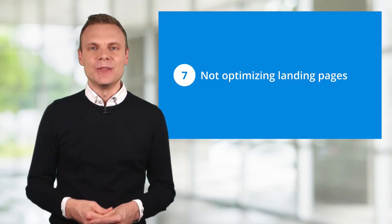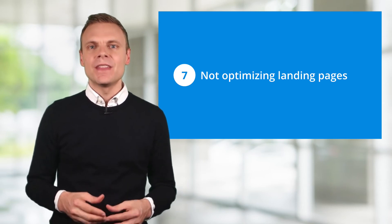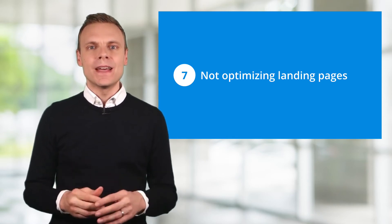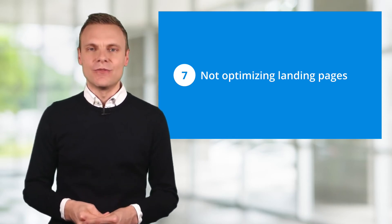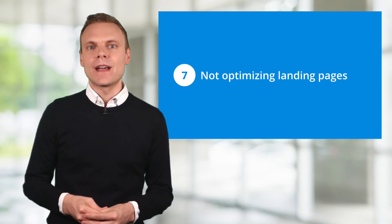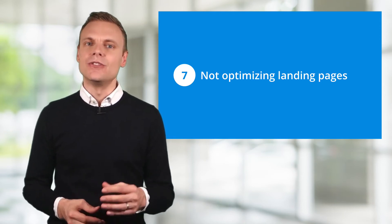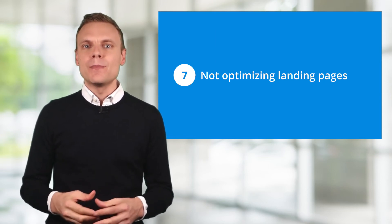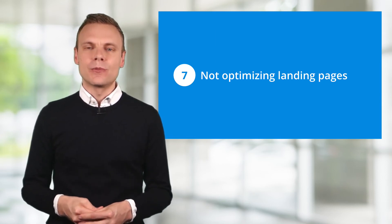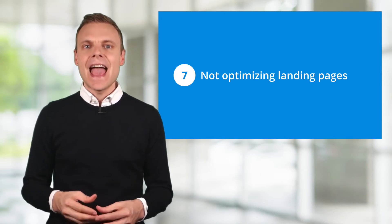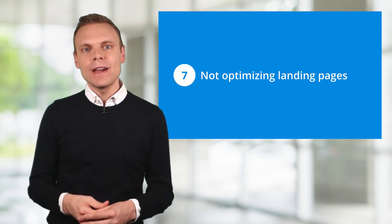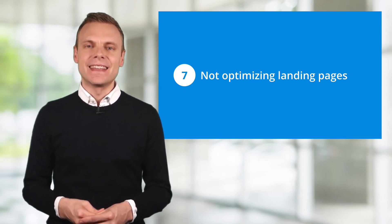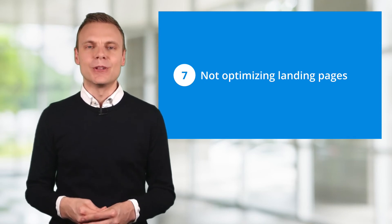Mistake number 7 is not optimising your landing pages for conversions. One of the best ways to improve your results is to run conversion tests — creating a new version of your landing page, sending some traffic to it and some to the existing version, then reviewing the results. By improving your landing pages, you'll also improve campaign performance and increase the ROI from AdWords. A great way to run conversion tests is to use Google Optimise; you can find a link to a getting started tutorial in the description below.